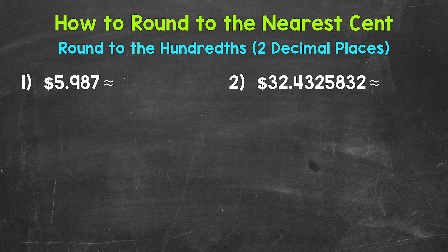Since there are one hundred cents in a dollar, the hundredths place is the furthest decimal place to the right that we go when working with money. So that means we sometimes need to round to the nearest cent if the decimal goes past the hundredths place when working with money.